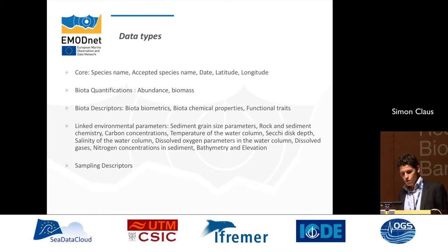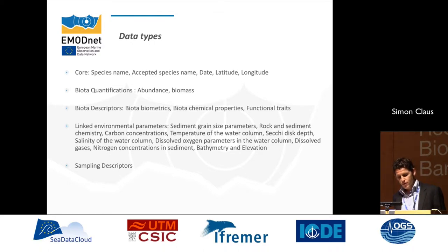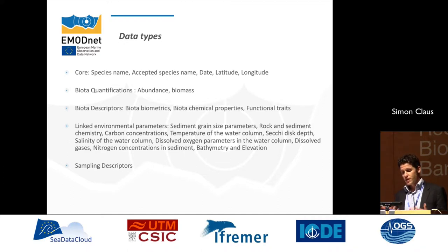The core data type is the name of a species linked with an AphiaID, latitude, longitude, and a date. Then we have biota quantification — information on the abundance and biomass of species — as well as biota descriptors such as biometric data like animal sizes, biota chemical properties, functional traits, linked environmental parameters measured together with the biological observation, and sampling descriptors.